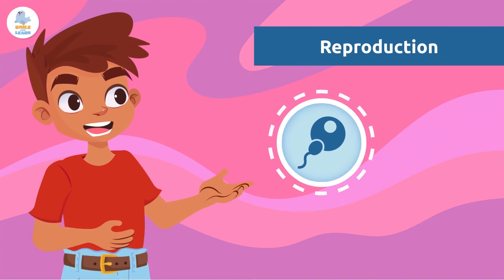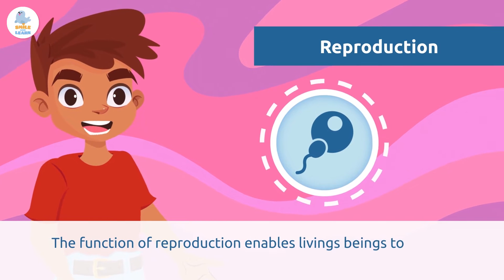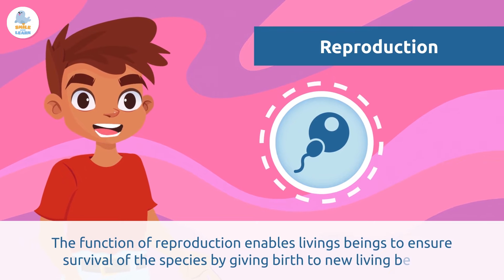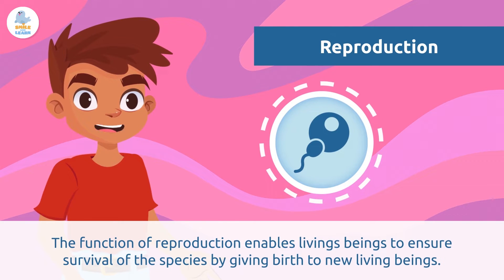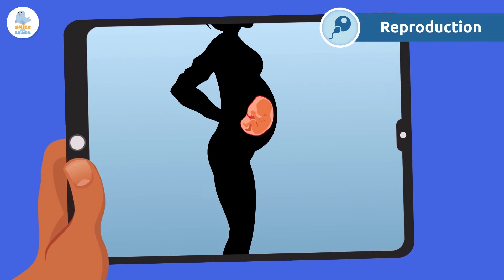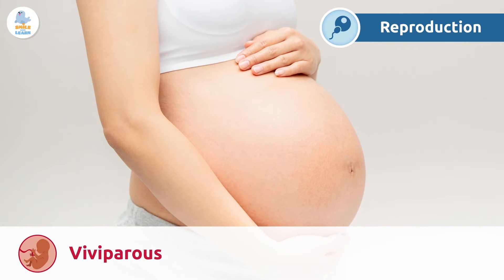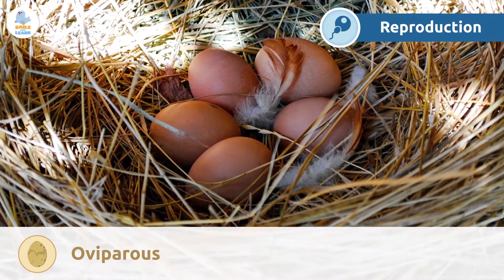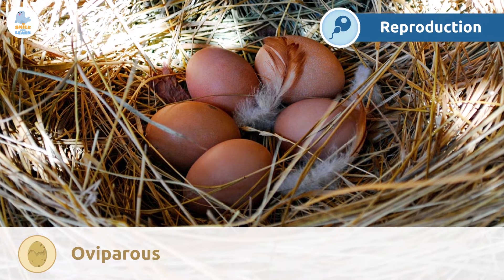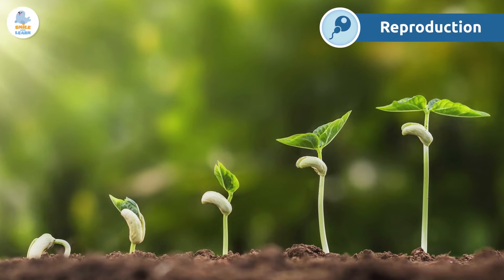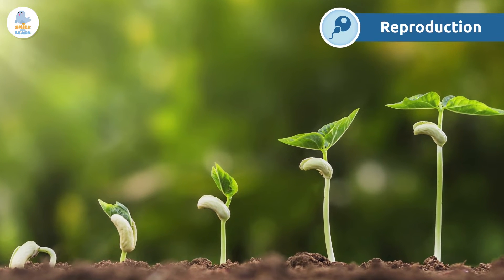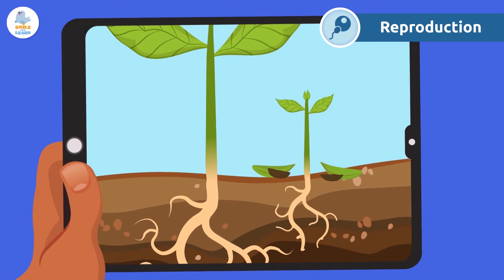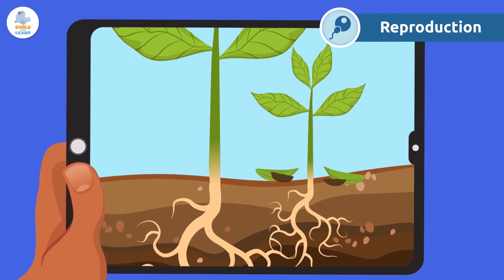The function of reproduction enables living beings to ensure survival of the species by giving birth to new living beings. Another example would be certain plants whose fruits or seeds fall on the ground and put out shoots for new plants of the same species to grow.